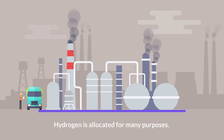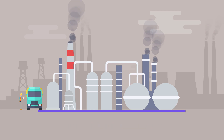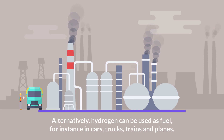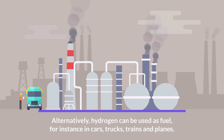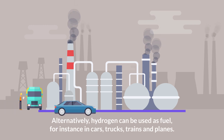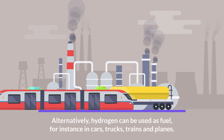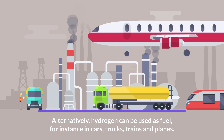Hydrogen is allocated for many purposes. Amongst those are fossil fuel processing and ammonia production. Alternatively, hydrogen can be used as fuel, for instance in cars, trucks, trains and planes.